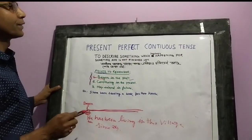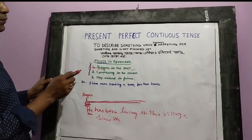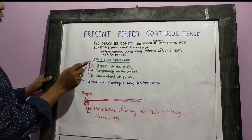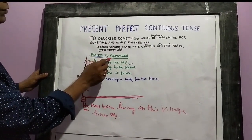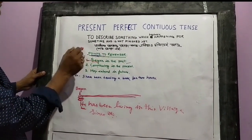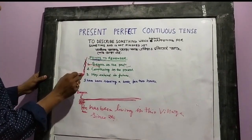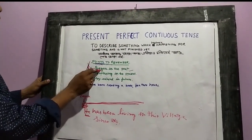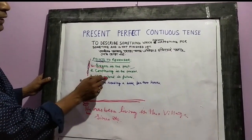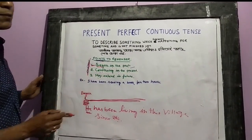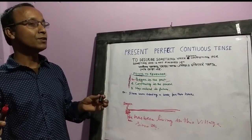In present perfect continuous tense, we have to remember these key points: the action begins in the past, it is continuing in the present, and it may extend into the future.